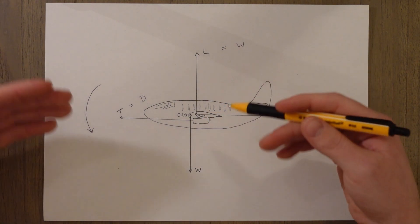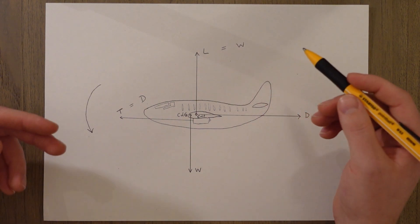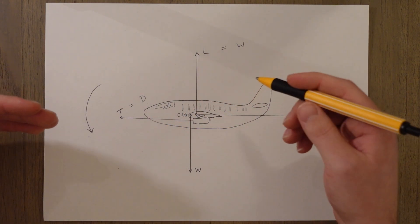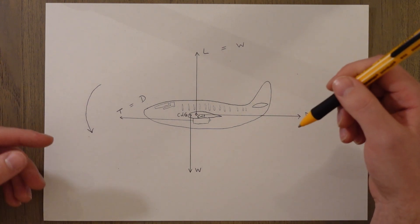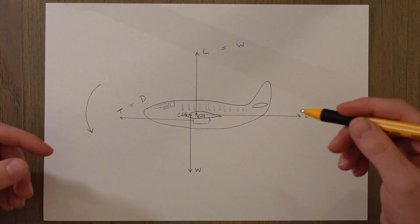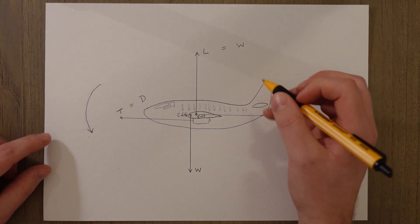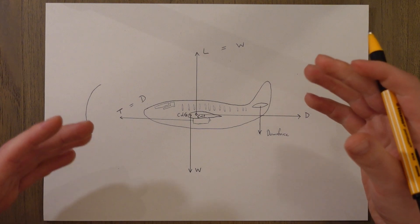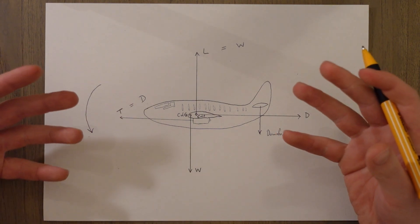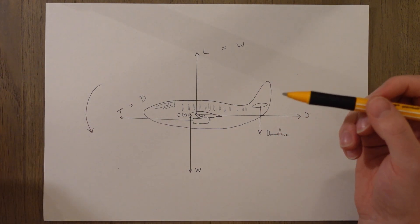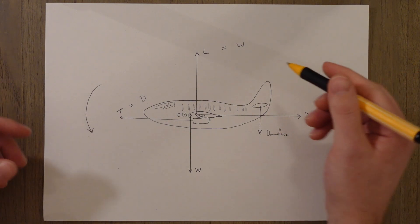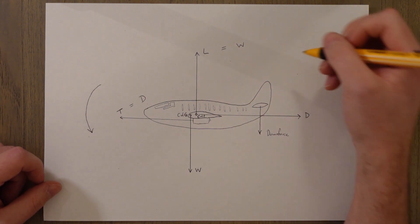So the lift weight couple causes a nose down pitching moment which we then need to counteract by creating an opposite nose up pitching moment, and we do this by creating downforce at the tail of the aircraft. This means we now have to make more lift to counteract this added downforce. So we can say that lift equals weight plus the downforce.